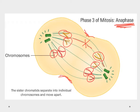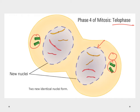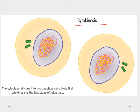The fourth and final phase of mitosis is telophase. The spindle fibers have all disappeared, chromosomes have reached opposite ends of the cell, and a new nuclear membrane begins to reform, creating a new nucleus. The DNA starts to unravel so it can be used again, and the cleavage furrow becomes more pronounced.